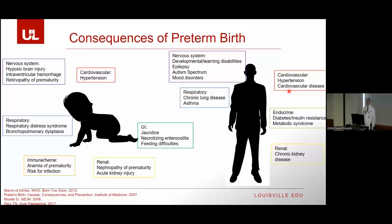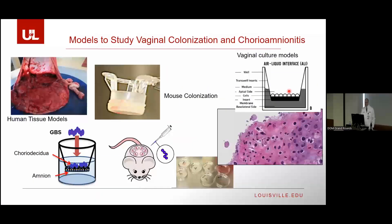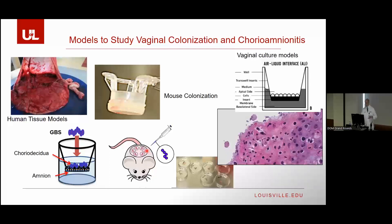How do we study these infections — vaginal colonization and chorioamnionitis? We use human tissue models: we get placentas from moms who undergo routine C-section, take the fetal membranes back to the lab, and infect them to look at host-pathogen interactions and responses. We use mouse models of colonization and pregnancy infection, and I'll show some work from our vaginal colonization model.